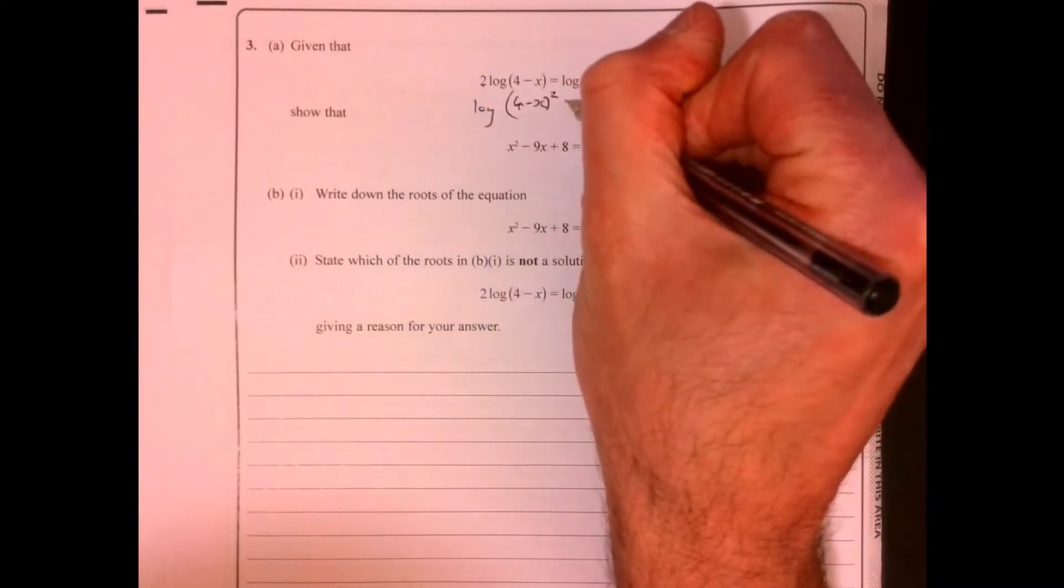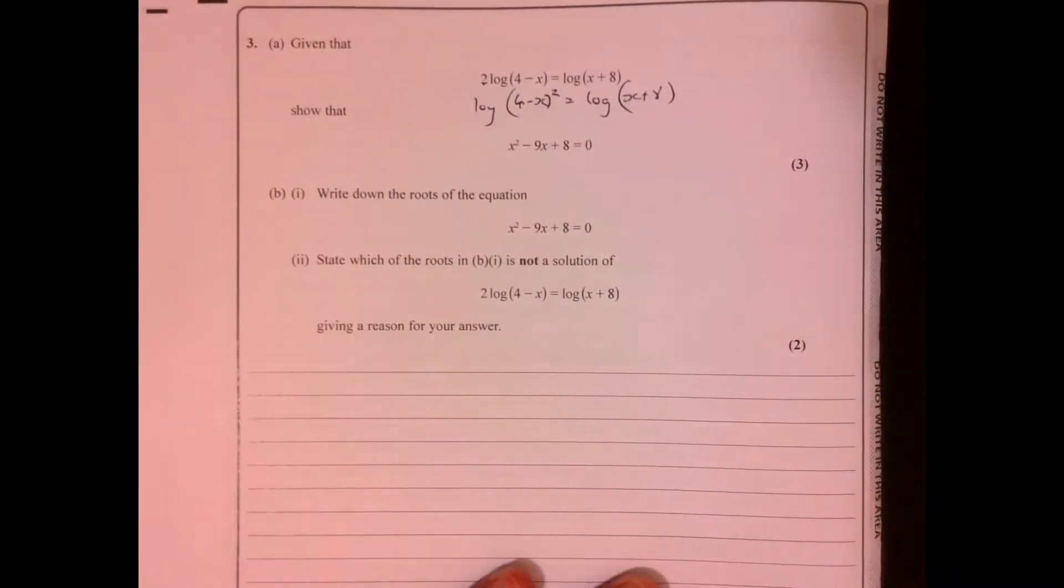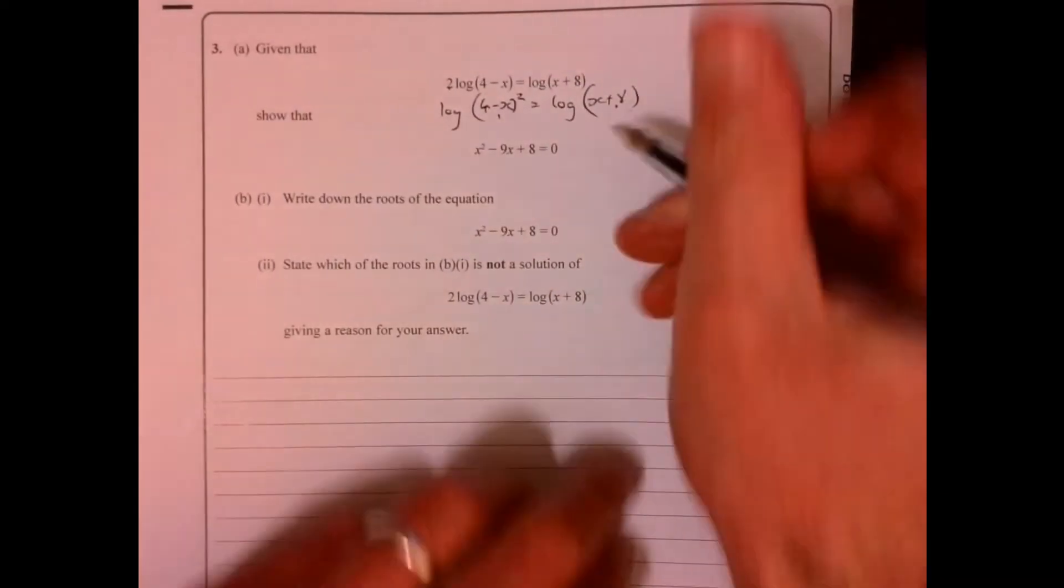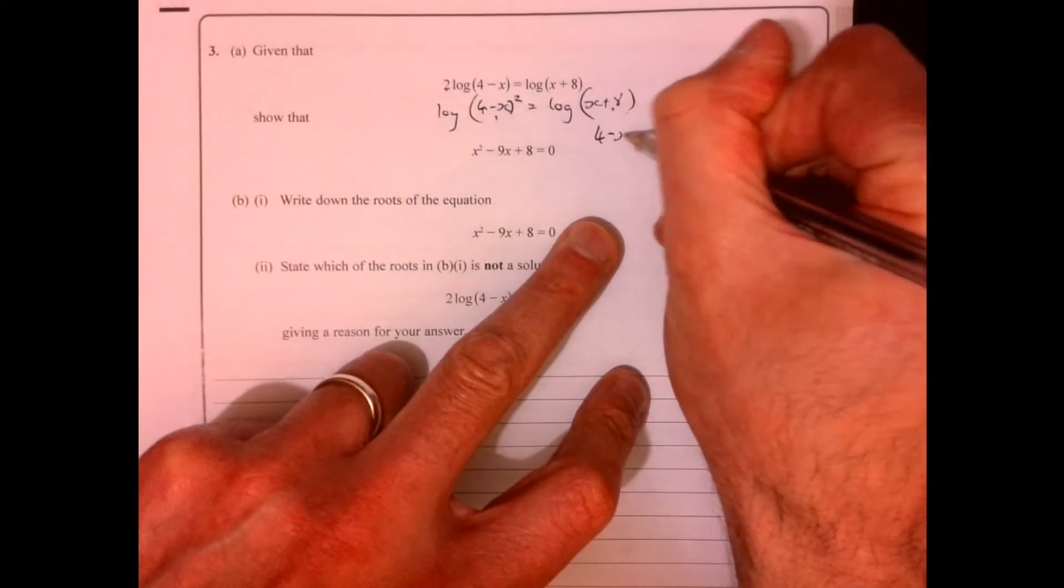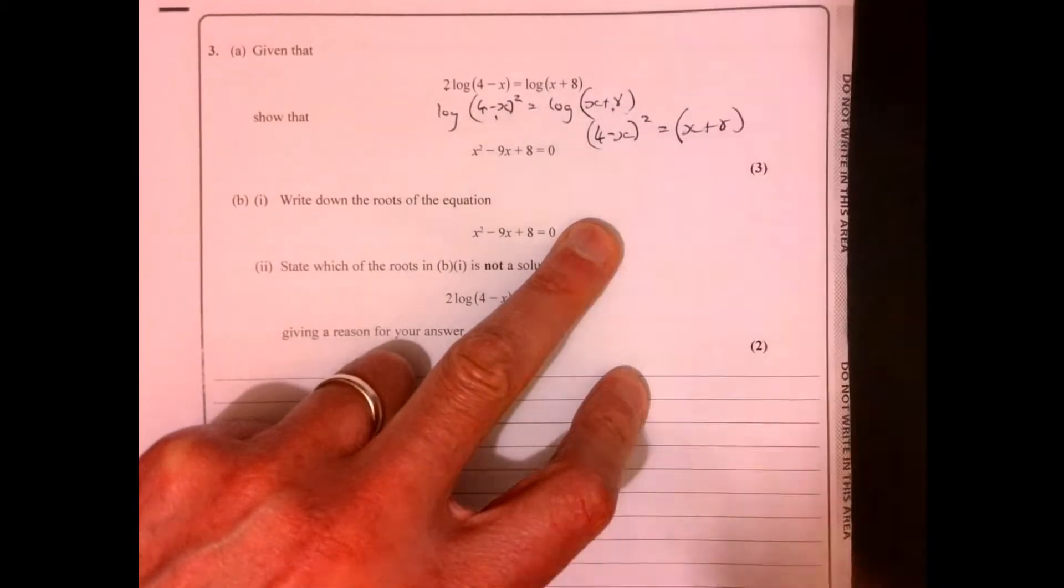Now if we just equate the logs, we can say that that's equal to that. There we go. So 4 minus x squared equals x plus 8.